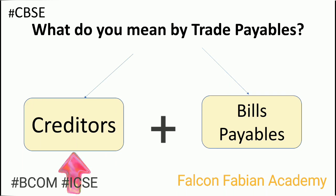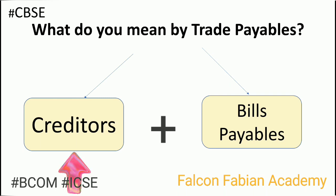In a business there are a lot of credit transactions. You might buy goods on credit, raw material on credit, furniture or any other asset on credit, or say machinery on credit. I will be using the term creditor solely for a person, firm, or entity from whom I have bought goods, raw material, inventory, or stock on credit. For example, suppose I am in the business of making potato chips and I buy potatoes on credit from a supplier, and I also buy machinery to make these potato chips on credit from another person. I am going to use the word creditor only for the person from whom I bought potatoes on credit.